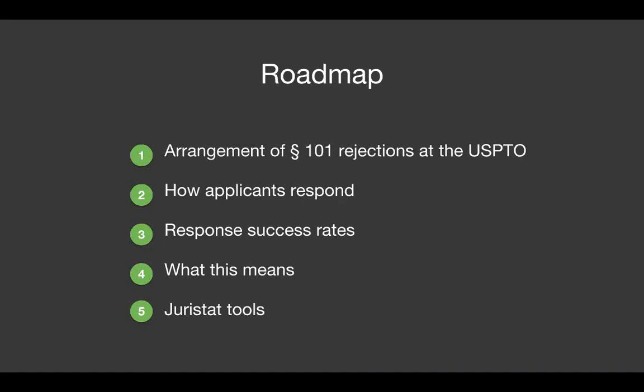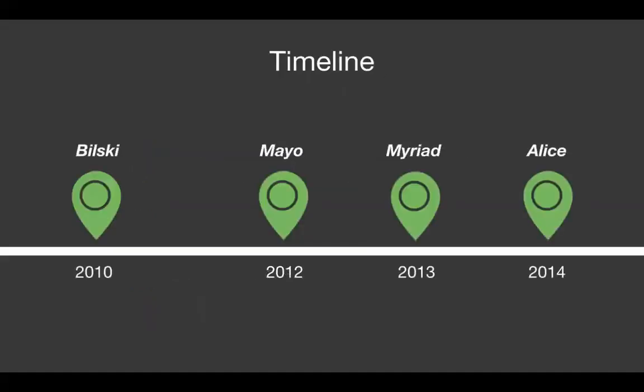Thanks, Austin. So just to give everybody a little roadmap of what we're going to be going over today: we'll start with the arrangement of 101 rejections at the USPTO, looking at where they fall and which technology centers and art units receive the highest proportion of 101 rejections. Then we'll look at how applicants respond and how successful those responses are. Then we'll talk about what this means for your practice, and hand it over to Aubrey to talk about some Juristat tools. Let's go ahead and get started.